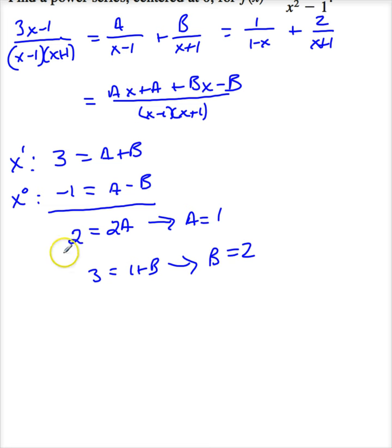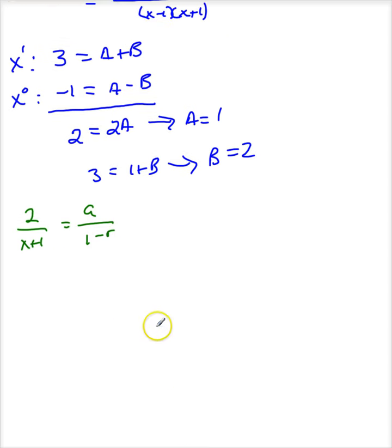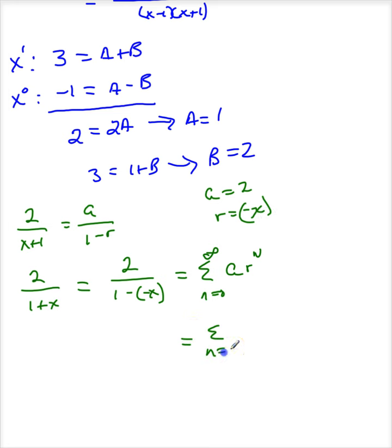Let me start by looking at the second one, 2 divided by x plus 1. Now remember, I'm trying to get it in the form a divided by 1 minus r. So let me rewrite this as 2 divided by 1 plus x, but I need that to be a minus, so this is 2 divided by 1 minus negative x. So this is going to be the sum as n goes from 0 to infinity of a, r to the n, which is, let me identify these, a is 2 and r is negative x. So this is going to be the sum as n goes from 0 to infinity of 2, negative x, to the n.